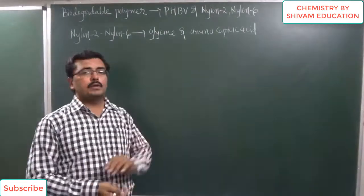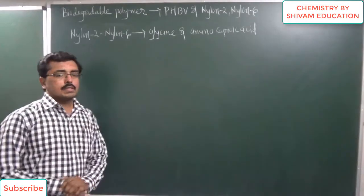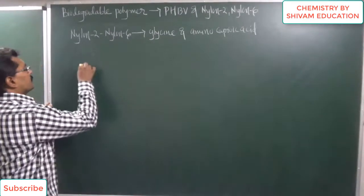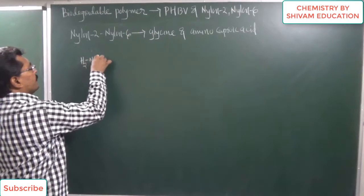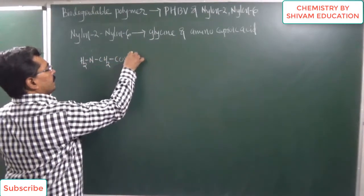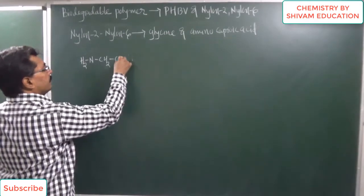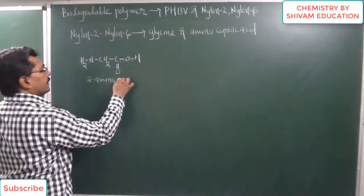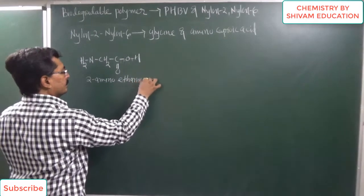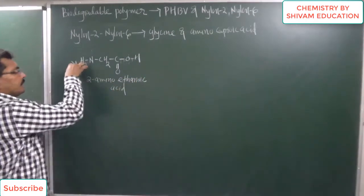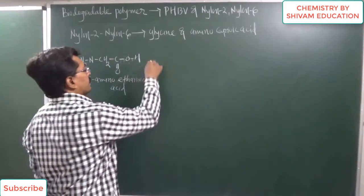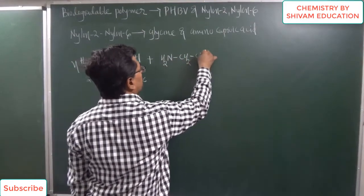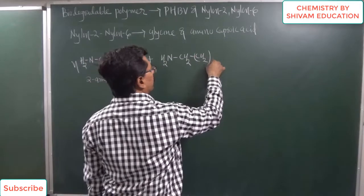Our next biodegradable polymer is Nylon 2-Nylon 6. Nylon 2 is prepared from 2-amino ethanoic acid, also known as glycine. Glycine is nothing but 2-amino ethanoic acid. We can write 2-amino ethanoic acid. And it is allowed to react with 6-amino caproic acid. We can write the structure of 6-amino caproic acid accordingly.